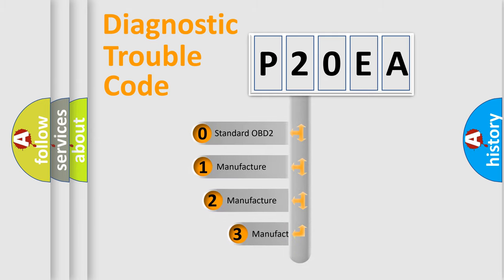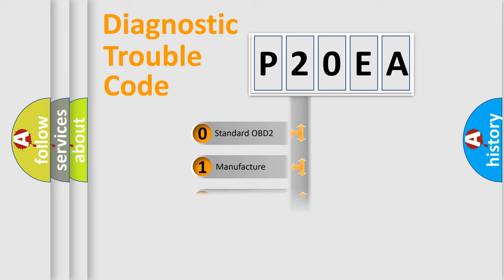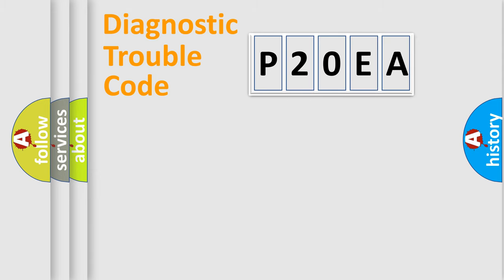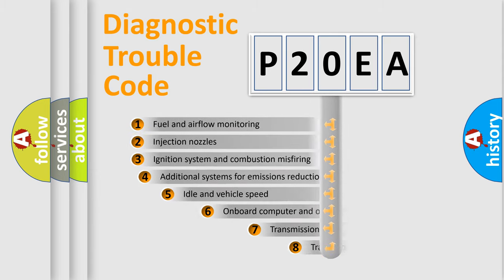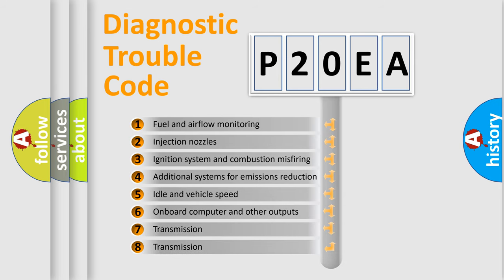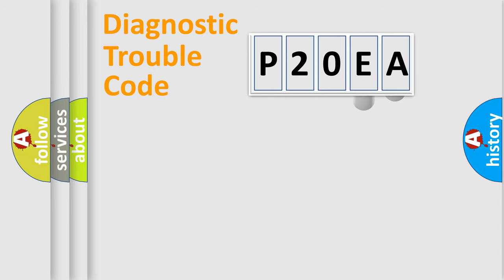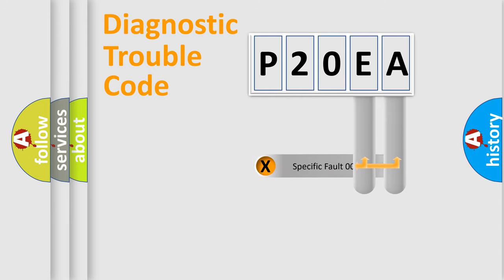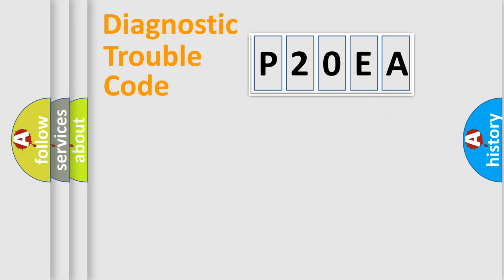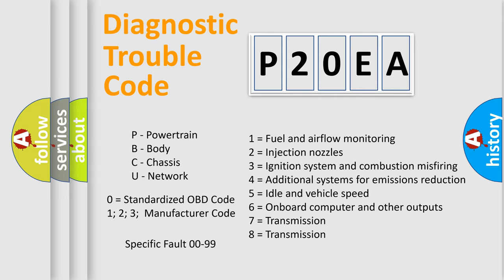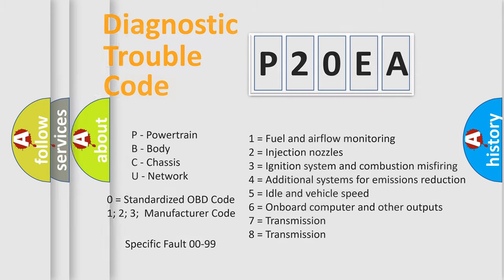If the second character is expressed as zero, it is a standardized error. In the case of numbers 1, 2, or 3, it is a more specific expression of a car-specific error. The third character specifies a subset of errors. This division is valid only for the standardized DTC code, where only the last two characters define the specific fault of the group. Such a division is valid only if the second character code is expressed by the number zero.